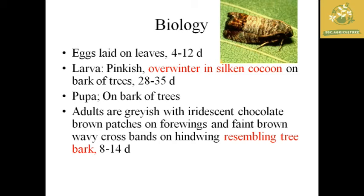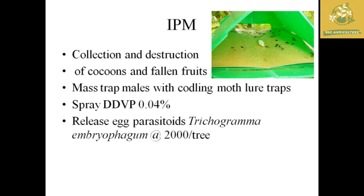The adult codling moth has a life period of around 8 to 14 days. Integrated pest management includes collection and destruction of cocoons and fallen fruits in the orchard, and use of pheromone traps for monitoring. Spraying DDVP at 0.04% is effective, and release of the egg parasitoid Trichogramma embryophagum at 2000 per tree is an effective biological control measure.